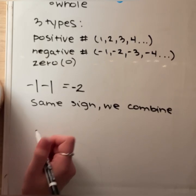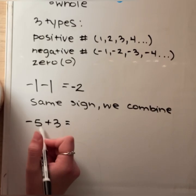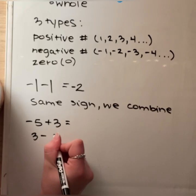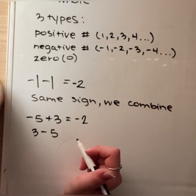Another type of problem we might see is a negative sign and a positive sign — for example, negative 5 plus 3. We can rewrite this by putting the negative 5 behind 3, writing it as 3 minus 5. What is the difference between 5 and 3? It's going to be 2, but there's a negative in front of the 5, so we can't forget about that — it's going to be negative 2.